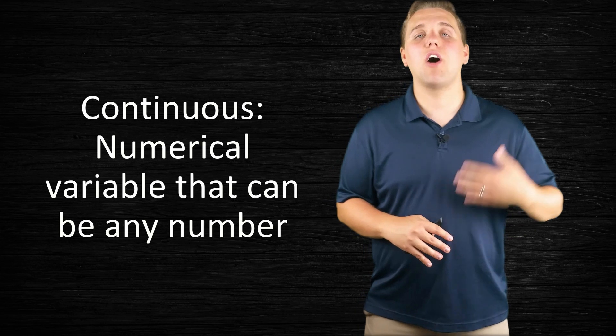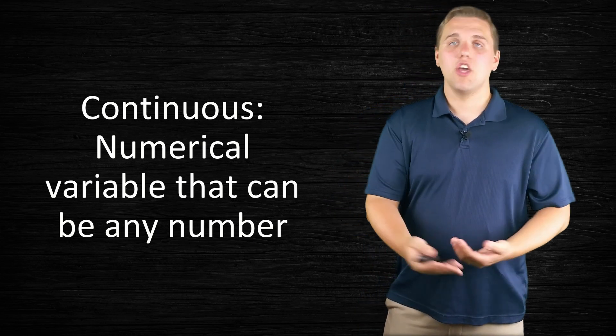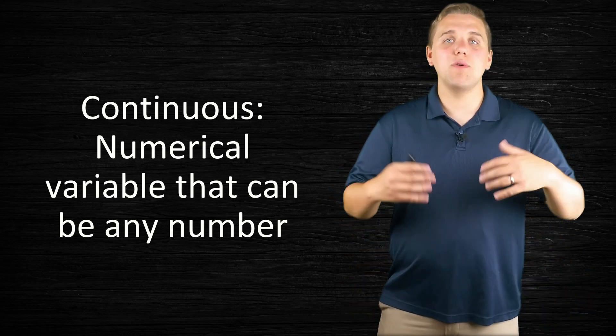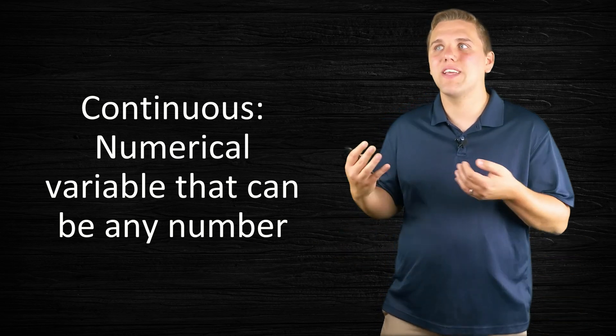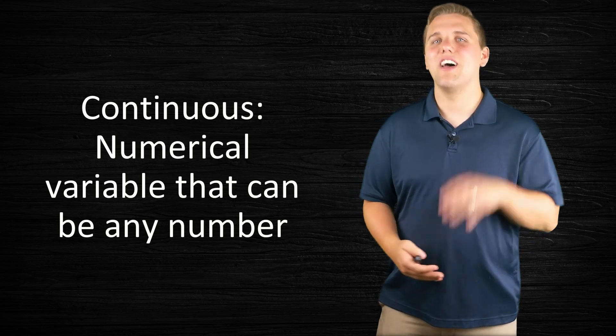The second type of numerical variable is called a continuous variable. These are variables that when you measure them, you can get any value—you can be as precise as you want to be. It wouldn't be weird if I say my age is 24.563. If that's the case, that would be considered a continuous variable. Let's go over some examples in the next lecture. I'll see you guys then.